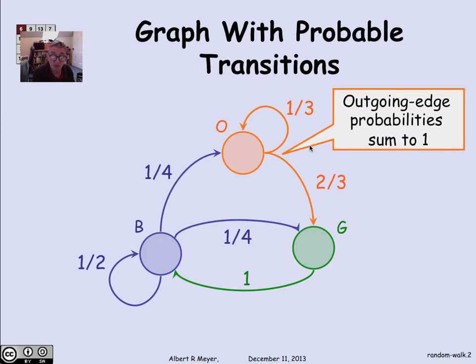So let's fill in the rest of the graph in a legal way. Here we have B with a half probability of going from B to B, a quarter from B to O, and a quarter from B to G. And the green state is certain in one step, if you're at green, to go to blue next. There's only one edge out. It has probability 1.